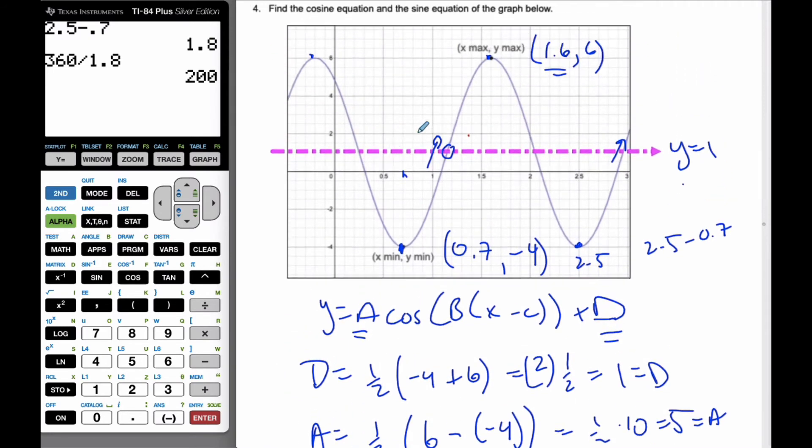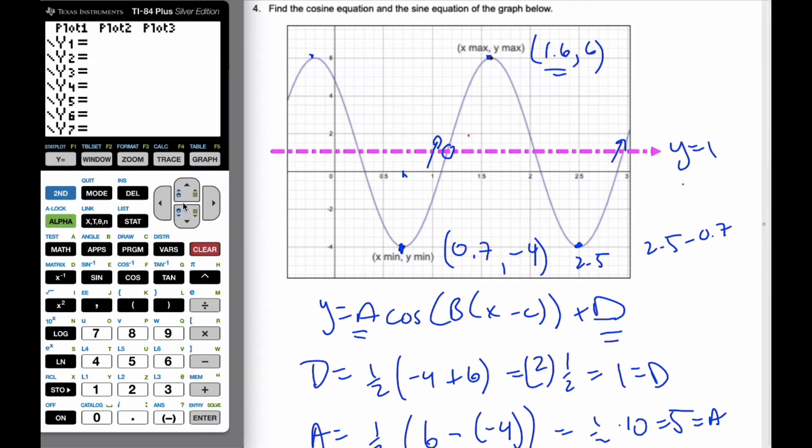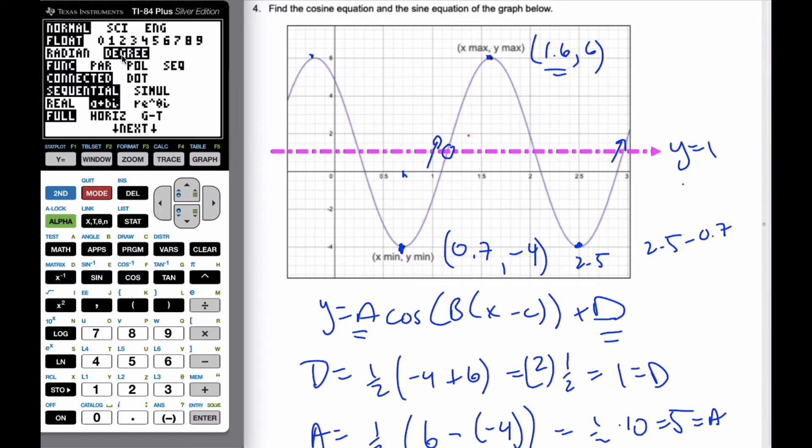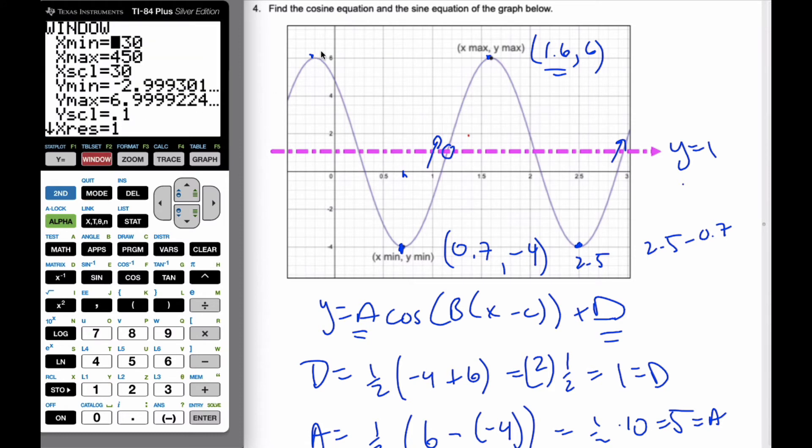And then what I also should do is I should check it with my calculator. I'm going to go here, I'm going to plug it in, and I'm going to, it was 5, cosine, 200, x minus 1.6, close parenthesis, close parenthesis, plus 1. Make sure I'm in degrees. And my window, I have a graph here. I'm going to make my window exactly the same as this, so I don't have to look at the points more closely than if, visualize if they're the same.